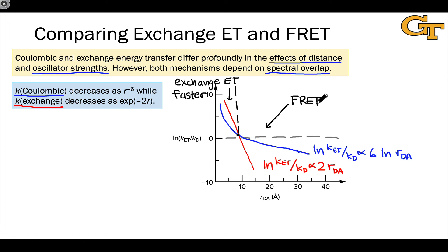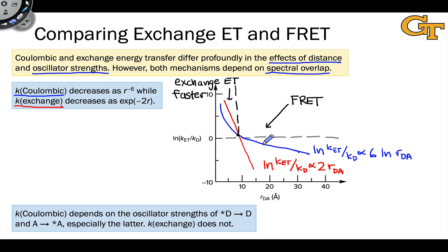FRET still has a non-negligible rate even at very long distances — 20, 30, 40 angstroms and beyond between the donor and acceptor. This is what applications of FRET take advantage of for measuring distances. We have the ability to detect differences between positions at different distances as a result of differential FRET responses between donors and acceptors, which is pretty remarkable.